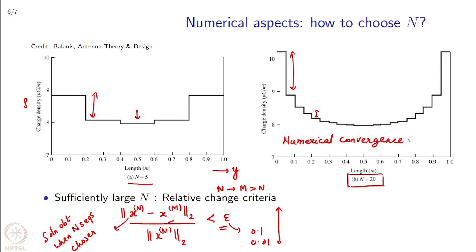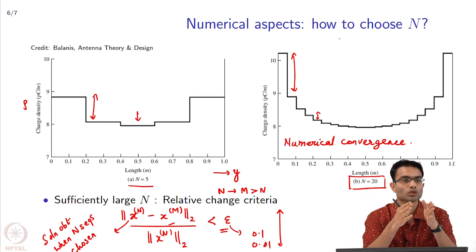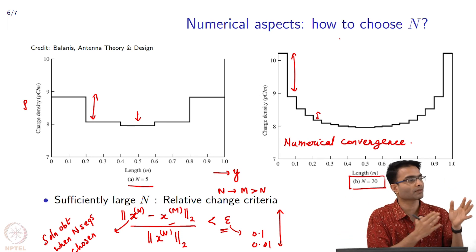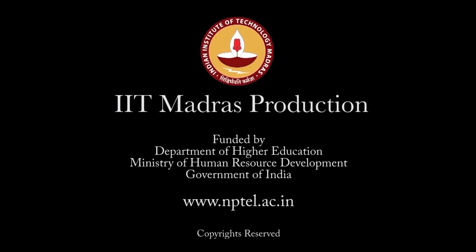Another way to improve accuracy, besides increasing N, is to choose basis functions more intelligently. With pulse basis functions we are forced to approximate a smooth function by a set of pulses, which is why we need a large number of them. Choosing more sophisticated basis functions allows us to keep N small yet achieve a more accurate solution.